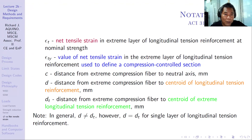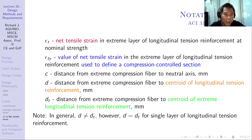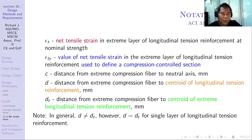Now we discuss the different notations. εt is the net tensile strain in the extreme layer of longitudinal tension reinforcement at nominal strength. εty is the value of net tensile strain in the extreme layer of longitudinal tension reinforcement used to define a compression-controlled section. c is the distance from the extreme compression fiber to the neutral axis, in millimeters. d is the distance from the extreme compression fiber to the centroid of the longitudinal tension reinforcement, in millimeters.